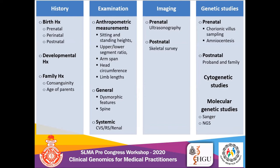As some skeletal dysplasias have non-orthopedic complications, examination of all systems is also very important. For imaging, second trimester anomaly scans followed by serial growth scans are carried out for prenatal diagnosis. If indicated, genetic studies are performed using chorionic villus sampling or amniocentesis. After birth, if a skeletal survey of the proband does not lead to a definitive diagnosis, we perform genetic studies to confirm the genetic etiology — in the proband alone, as a trio with parents, or as a quartet including another family member.